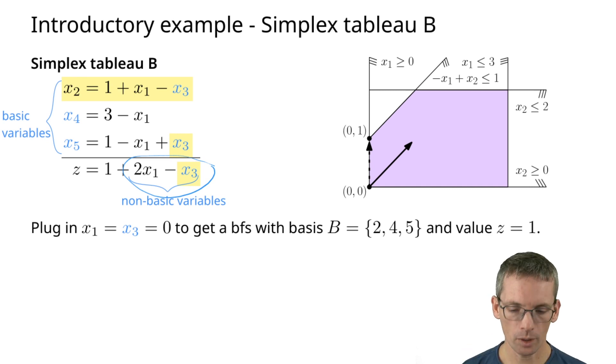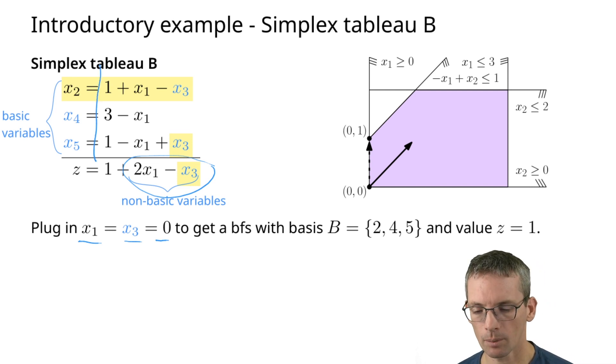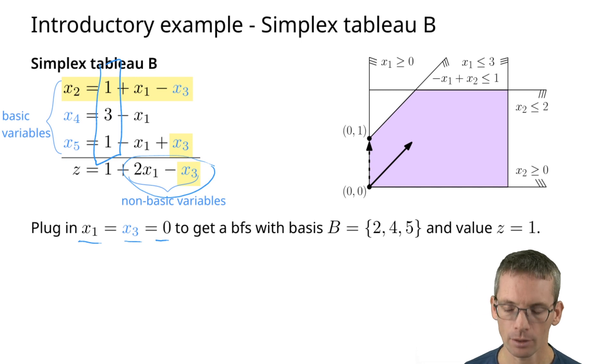This is now our new simplex tableau, where we did a so-called pivot step and took x3 out of the basis and put x2 into the basis. Now we have again a basic feasible solution, which we can very easily read off by simply setting x1 and now x3 to 0. Then my basic feasible solution is simply x2 is 1, x4 is 3, x5 is 1. I can also read off the objective value easily. This is just 1. So x1 is 0, x2 is 1. In my 2D figure, this corresponds to this point here.